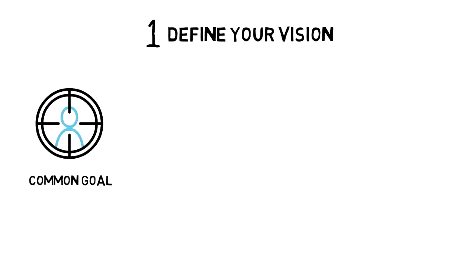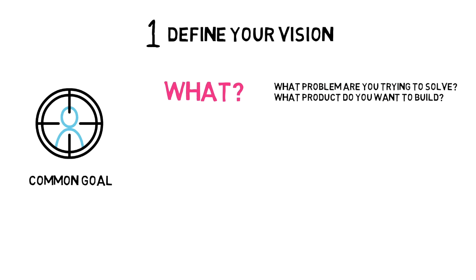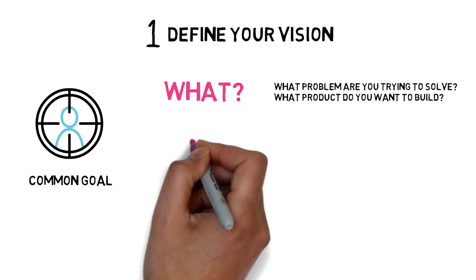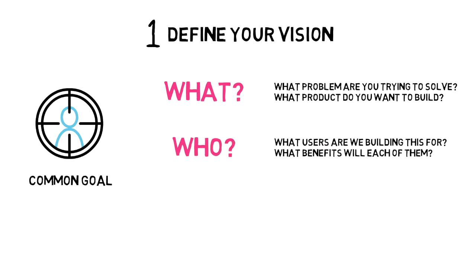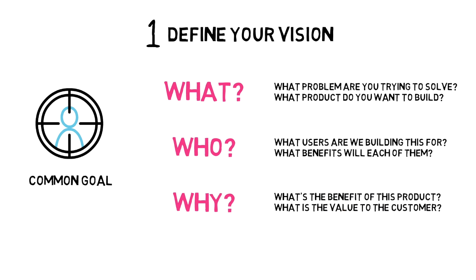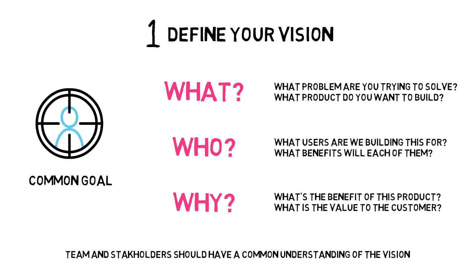Let's look at how to create your user story map. The first thing you want to do before starting is to frame the exercise around a common goal — this could be your product vision. Think about the what: what problem are you trying to solve, what product do you want to build, or what feature do you want to add? Then think about the who: is there a specific user or user subset you're building for, and what benefits will each of them get? And lastly, think about the why: what is the benefit to your company for building this feature or product, and what is the value added for the customer? Make sure everyone understands the vision and the goals of the user story mapping session.